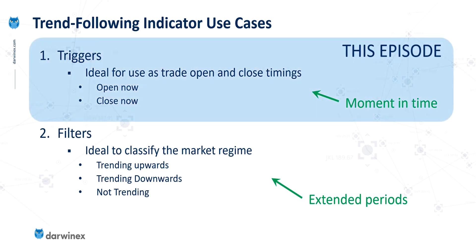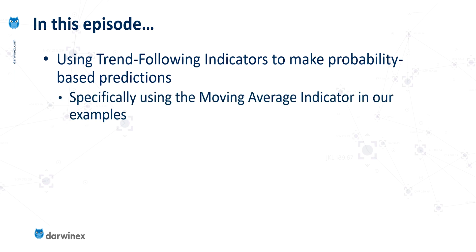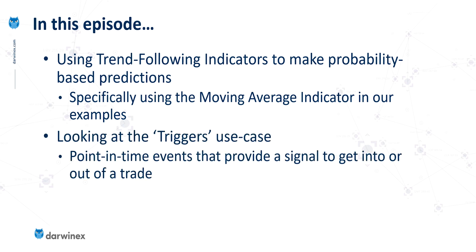In this episode, we're going to focus our attention on triggers, and specifically using these to make probability-based predictions. The indicator we're going to use in our examples is probably the most used indicator, which is the moving average. This is what we'll use as the example for both the triggers, but also in the future for the filters.